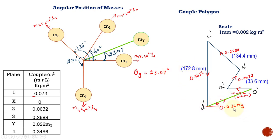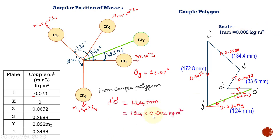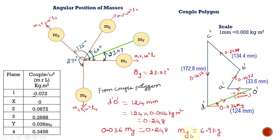To find the magnitude of my, we measure the closing distance D' to the close point: it is 124 mm. Converting using the scale: 124 multiplied by 0.002 equals 0.248 kg·m². Setting 0.036·my equal to 0.248, we get my equals 6.9 kg. So the angular position of mass y is 23.07 degrees and its magnitude is 6.9 kg.